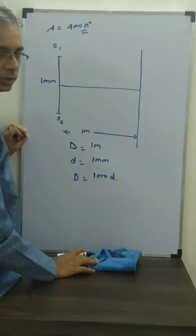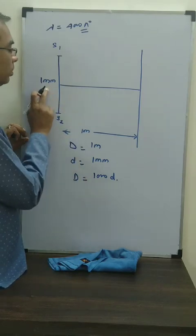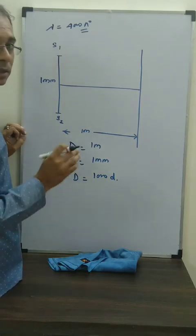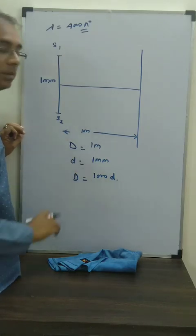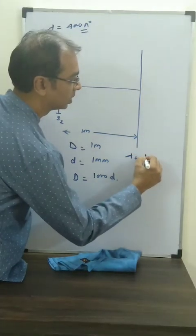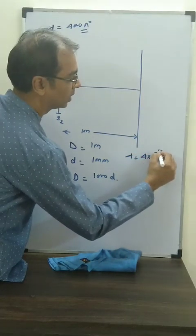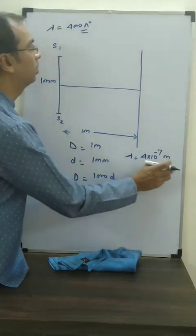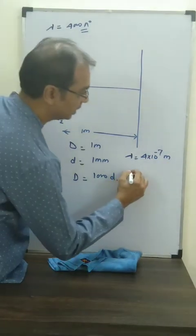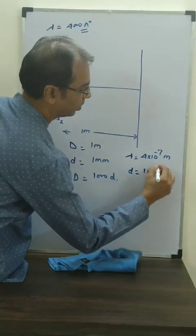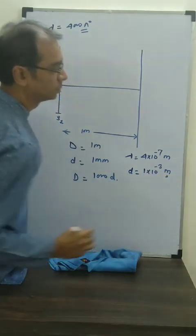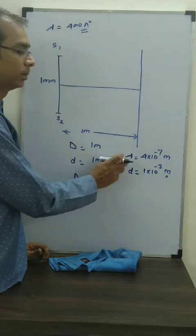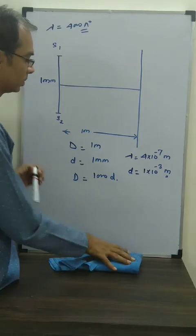Capital D is 1 meter and d is 1 mm, so D is a thousand times more than small d. Second, we note that d is 1 mm and wavelength is 4000 Angstroms, which is 4×10⁻⁷ m, whereas d is 1×10⁻³ m. So d is 10,000 times larger than lambda — meaning d is very large compared to lambda.